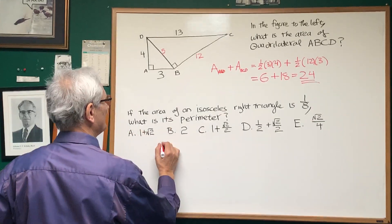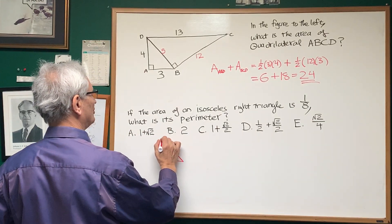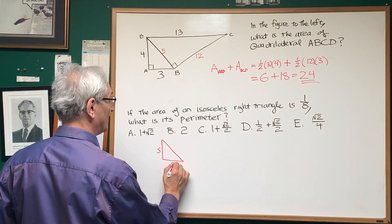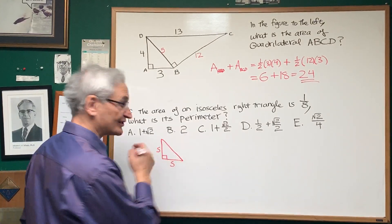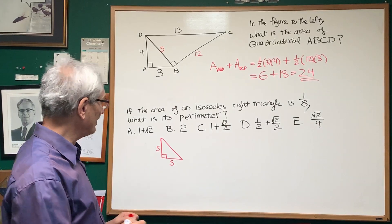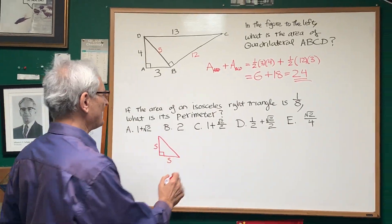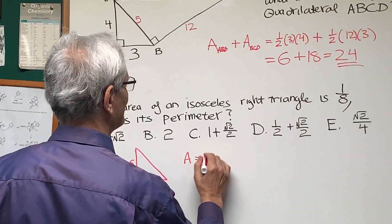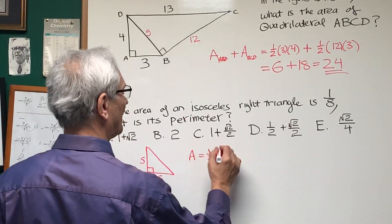Isosceles right triangle. What does that mean? It means we have a right triangle whose two shorter legs are identical. There is our isosceles right triangle. So, what do we know?